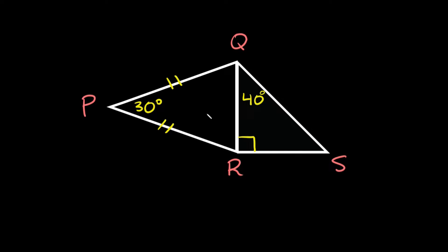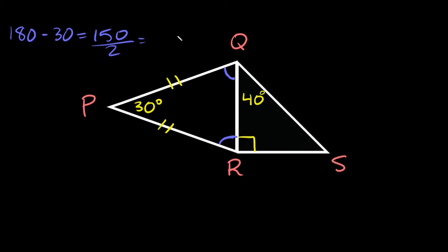Now the first thing you want to do is always find all the missing angles. So let's start with this isosceles triangle. One thing we know about isosceles triangles is that when the two sides are congruent, that means the angles are also congruent. Now remember all the inside angles of any triangle always add up to 180 degrees. So if we did 180 minus the one we already know, 30, that's equal to 150. So these two angles have to add up to 150 and we also know that they're the same angle. So we could just say 150 divided by 2 and that's equal to 75. So that means this angle is 75 degrees and this angle is 75 degrees.